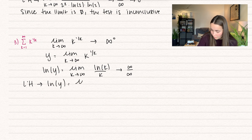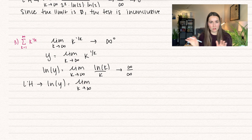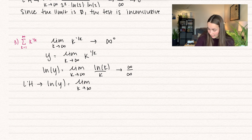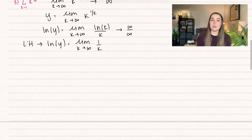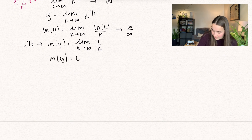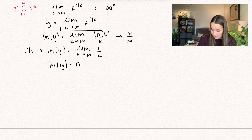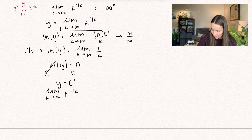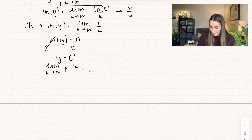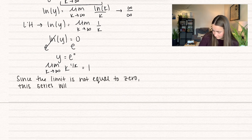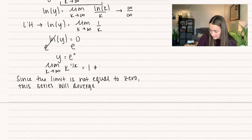We're only applying L'Hôpital's within the limit — don't take the derivative of the natural log of y. Applying L'Hôpital's gives 1/k divided by 1, which simplifies to 1/k. As k approaches infinity, this goes to 0, so ln y equals 0. To solve for y, we raise both sides as exponents of e: e and natural log cancel, giving y equals e to the 0, which equals 1. Since y equals the original limit as k approaches infinity of k to the 1/k, that limit equals 1. Since 1 is not equal to 0, by the divergence test, this series diverges.